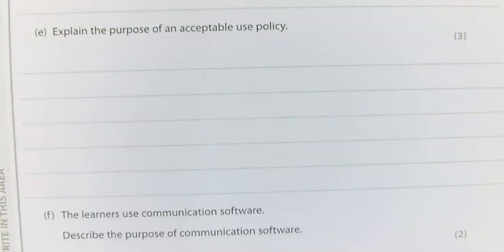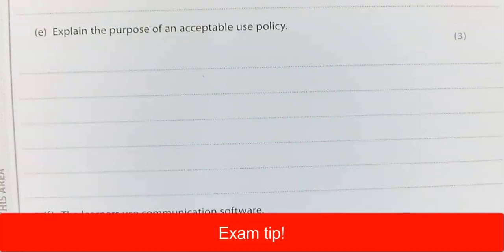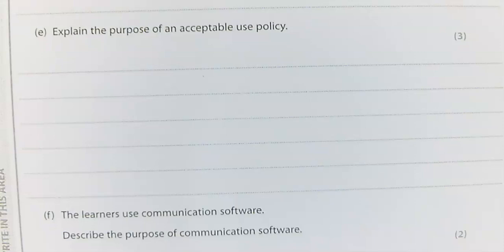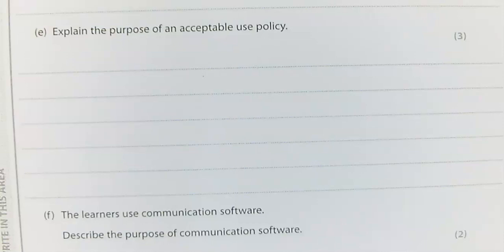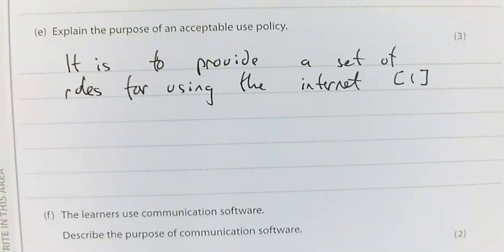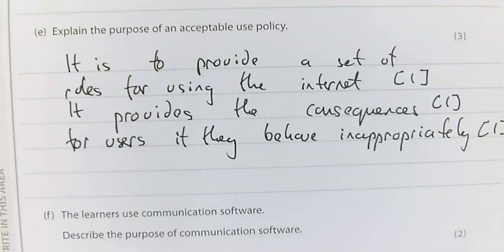The next question asks you to explain the purpose of an acceptable use policy. An exam tip: a lot of students didn't understand this and wrote about data protection, copyright, or misuse of equipment — that isn't an acceptable use policy. An acceptable use policy is a set of rules for using the internet and using the network, particularly at school. If you break those rules, you're likely to be banned from the network. So for the marks: it provides a set of rules for using the internet, and it provides consequences for users if they behave inappropriately.